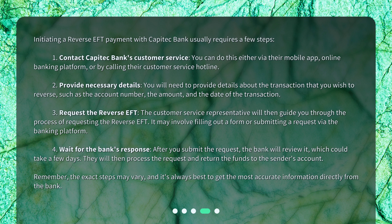Step 2: Provide necessary details. You will need to provide details about the transaction that you wish to reverse, such as the account number, the amount, and the date of the transaction. Step 3: Request the reverse EFT. The customer service representative will then guide you through the process of requesting the reverse EFT, which may involve filling out a form or submitting a request via the banking platform.